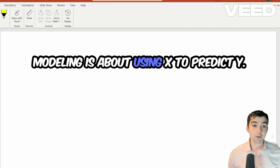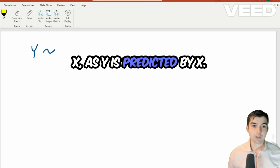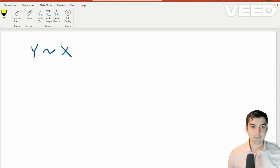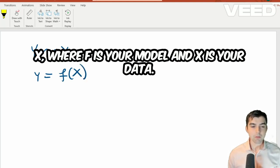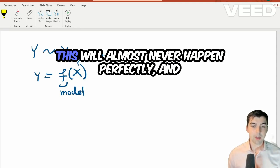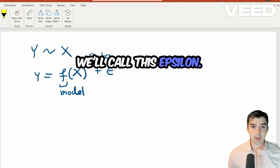Modeling is about using x to predict y. In our language, you write this as y is predicted by x. In math, this says that y is equal to f of x, where f is your model and x is your data. This will almost never happen perfectly, and so there will be a residual. We'll call this epsilon.